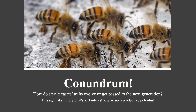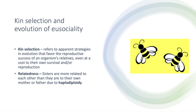Darwin's dilemma: sterile worker behaviors challenged his theory of natural selection. It is against an individual's self-interest to give up reproductive potential. This raises the idea of kin selection and the evolution of eusociality, as well as altruism — valuing another's life above your own. Kin selection refers to evolutionary strategies that favor the reproductive success of an organism's relatives, even at a cost to the individual's own survival or reproduction. Workers have given up their reproductive success to raise the queen's offspring.